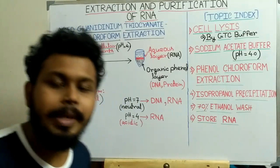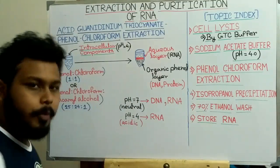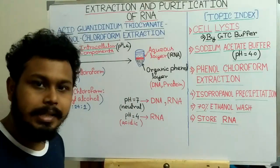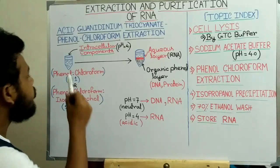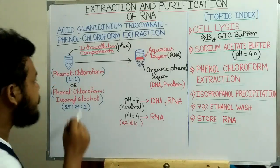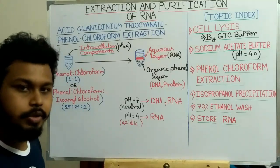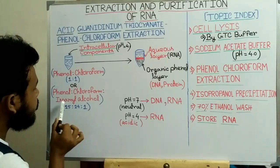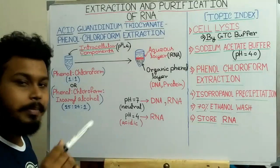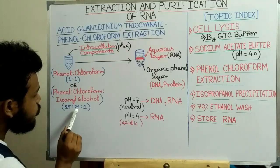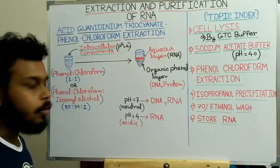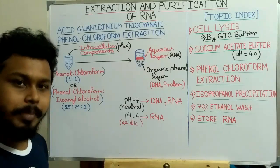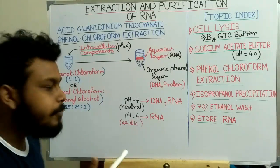In phenol-chloroform extraction, the intracellular components containing DNA, RNA, and protein at acidic pH are added to the phenol-chloroform mixture in a 1:1 ratio, or to a phenol-chloroform-isoamyl alcohol mixture in a 25:24:1 ratio. This mixture is then centrifuged.